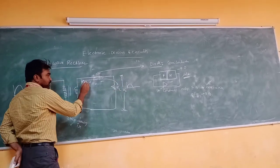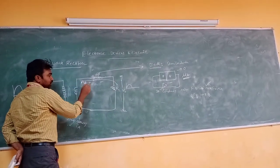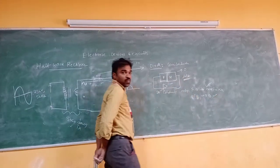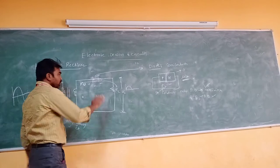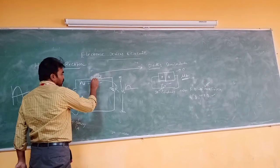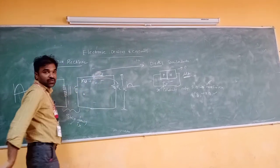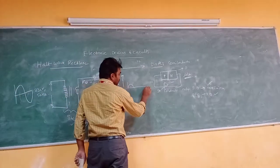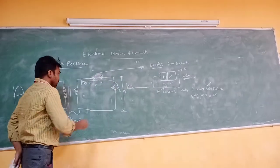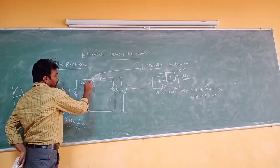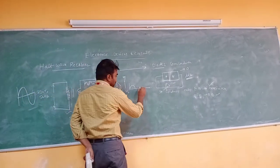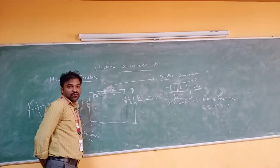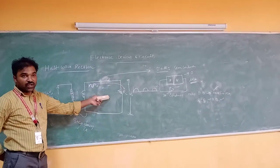In the reverse bias case, the diode is OFF and acts like an open circuit, so there is no output during the negative cycle. Then when the next positive cycle comes, the diode is ON again and output appears. This is the output waveform of the half-wave rectifier.